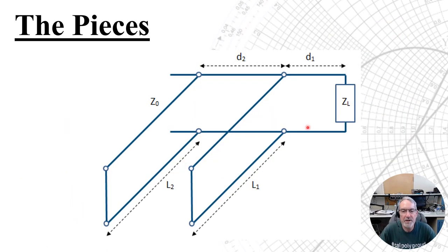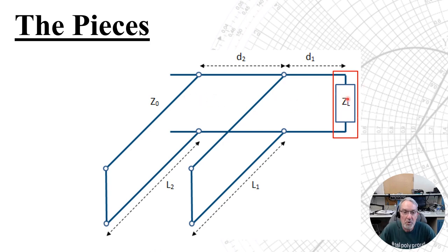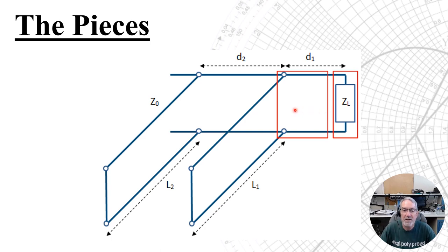Let's look at this from just the perspective of the transmission line. Consider that we start at the load and we're going to be moving toward the generator. At the load, we see our load impedance, and we're going to move away from the load, and as we do so that impedance is transformed. We eventually get to the first stub, but need to get the impedance to a point on the Smith chart where we can know we will land on the auxiliary matching circle. That is the purpose of this first stub — to provide the needed reactance to move the impedance onto the auxiliary matching circle.